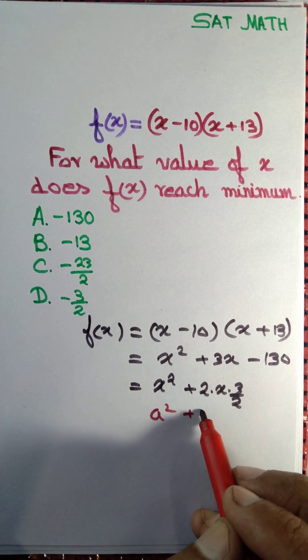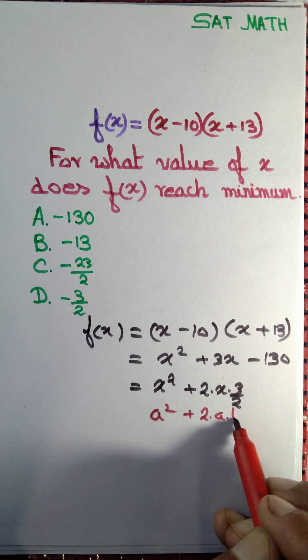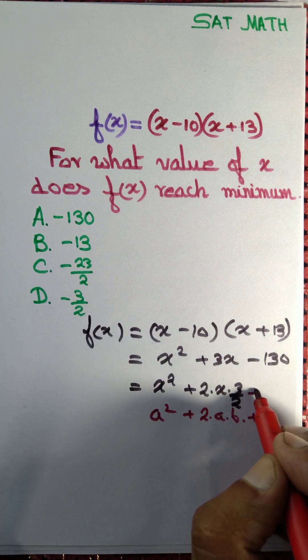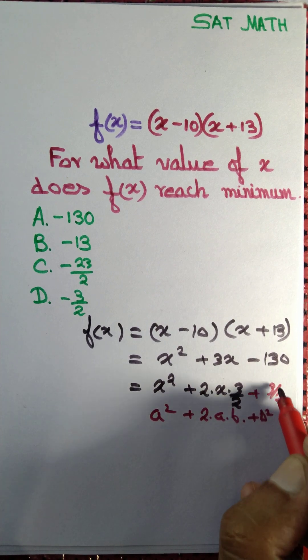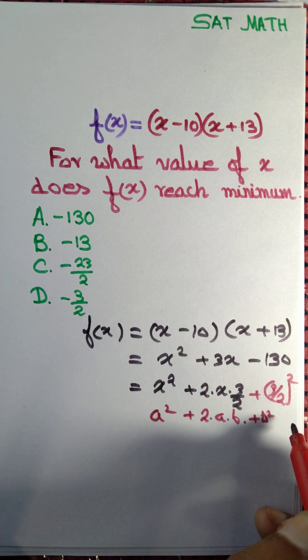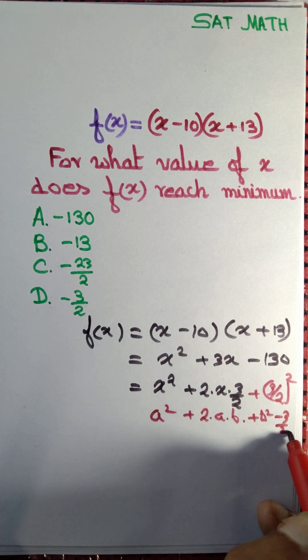So let's write +(3/2)², but we don't get the equality, so to maintain the equality I should write minus (3/2)² as well.